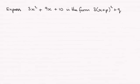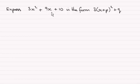Hi there. So for this question, we're asked to express 3x squared plus 9x plus 10 in the form of 3 times x plus p squared plus q. And this particular form is called completing the square. So I'm assuming that you're familiar with completing the square. If not, do check out the tutorials on this.